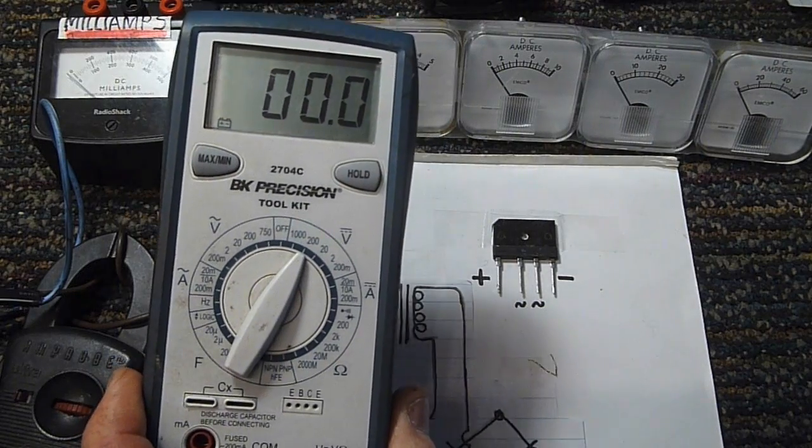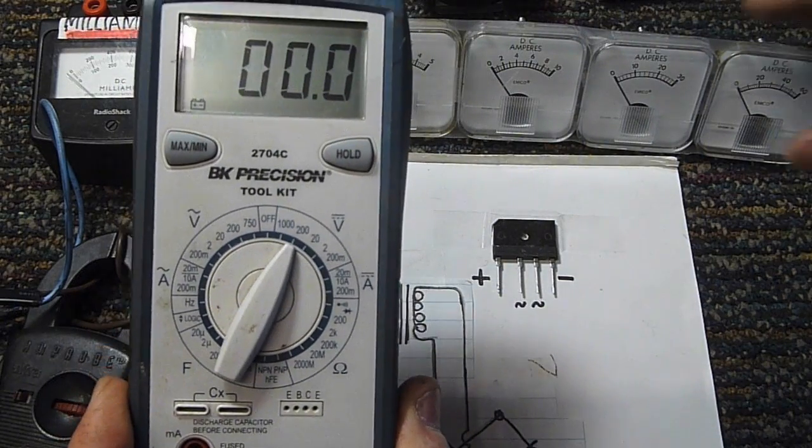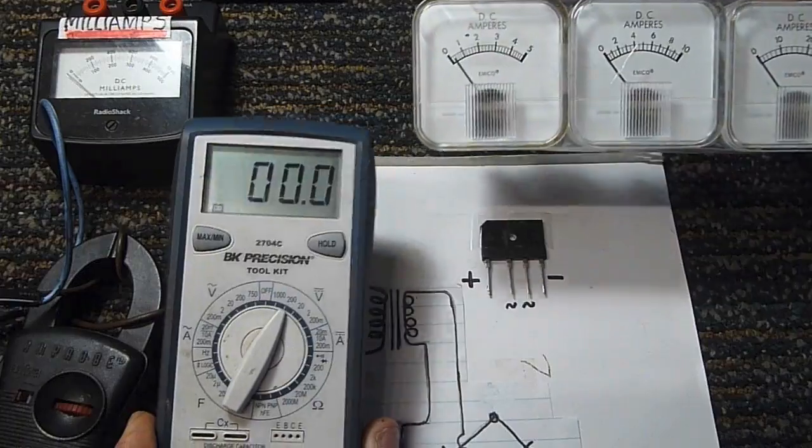And the reason for that short is a device inside of the meter known as a shunt, and that's used to calibrate the meter to read a particular scale.